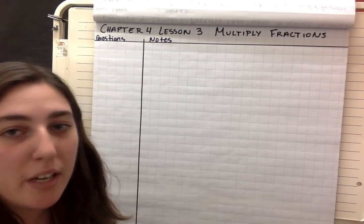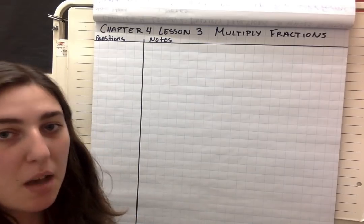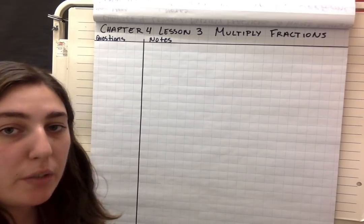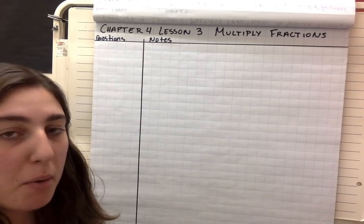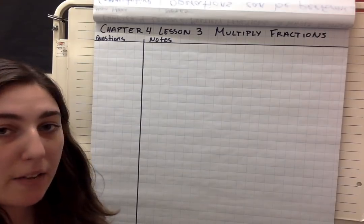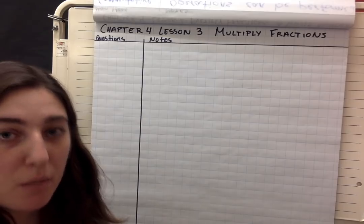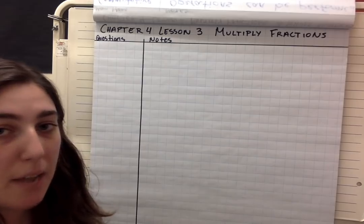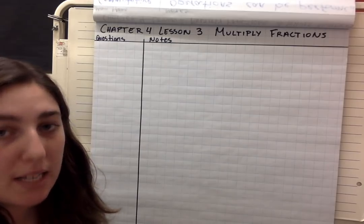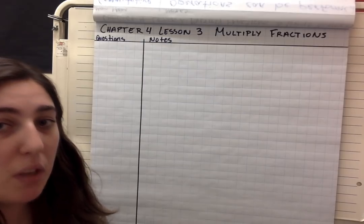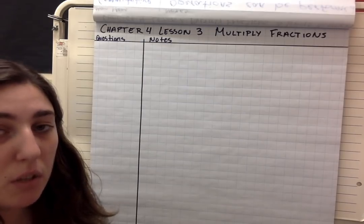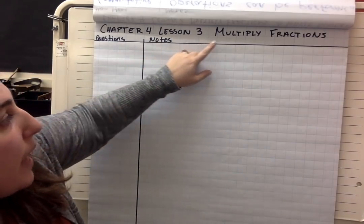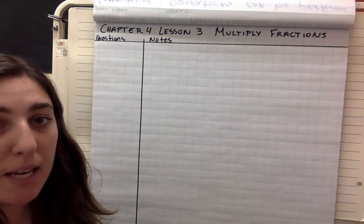Hey everybody, so today we're going to be learning Chapter 4, Lesson 3: Multiplying Fractions. Just a little reminder on what we did in Lessons 1 and 2. In Lesson 1 we were estimating — how to multiply a fraction times a whole number, a fraction times a fraction, and a mixed number times a mixed number. In Lesson 2 we learned how to solve multiplying a fraction times a whole number. Today we're learning to multiply fractions, so instead of estimating, we're solving.